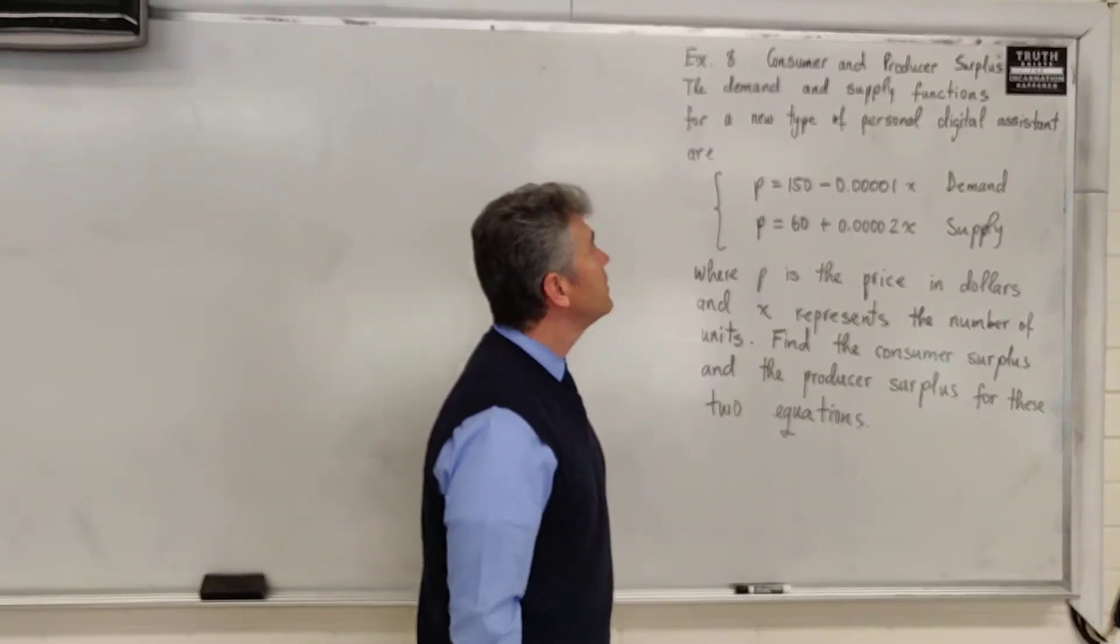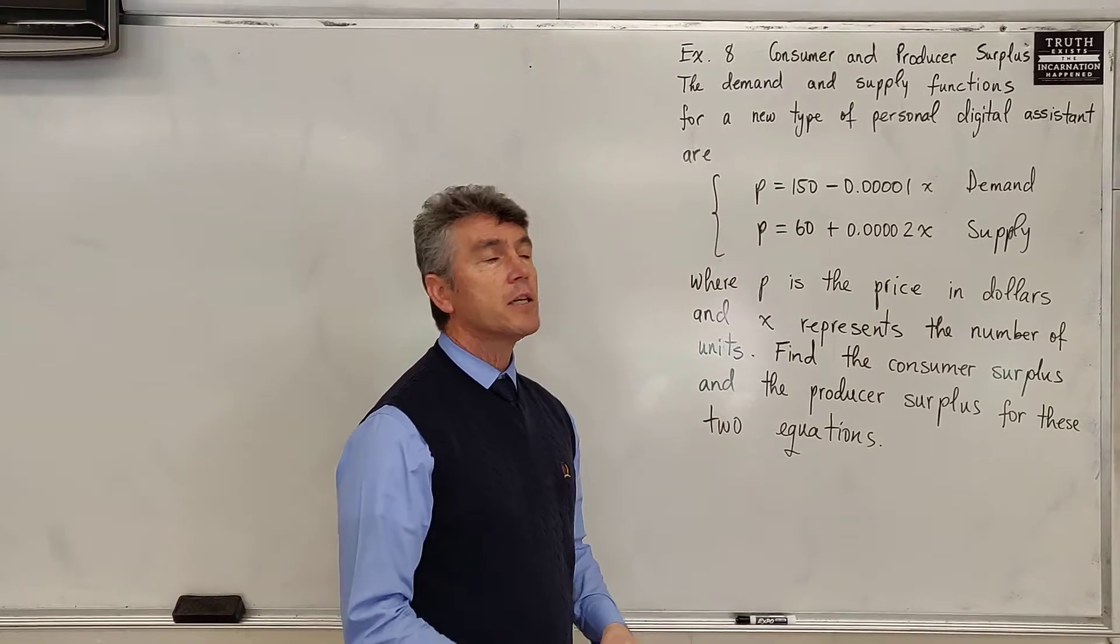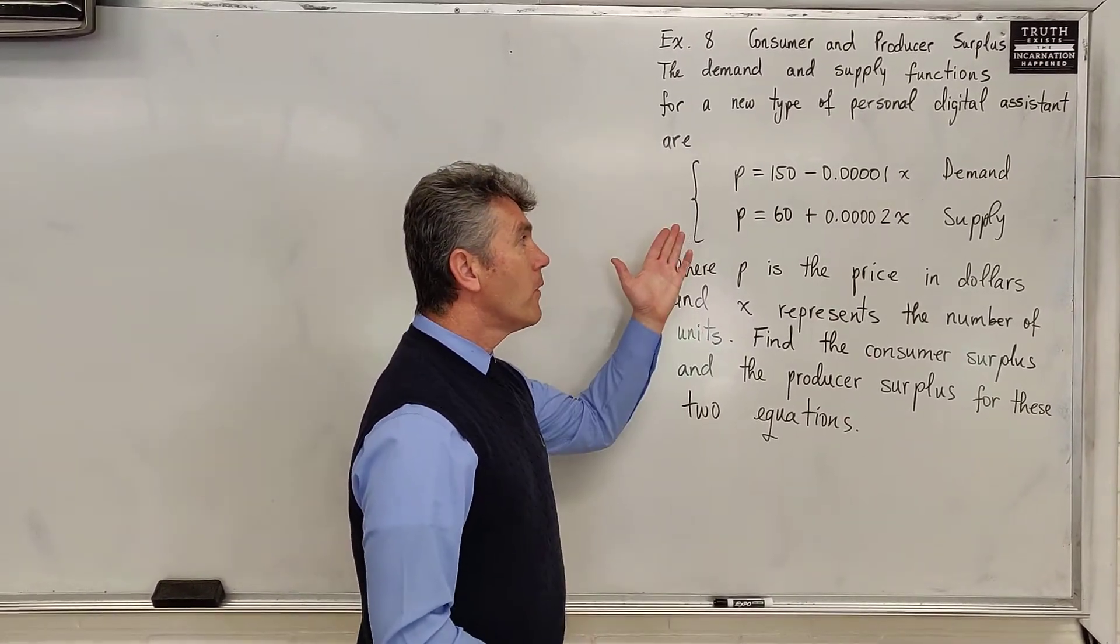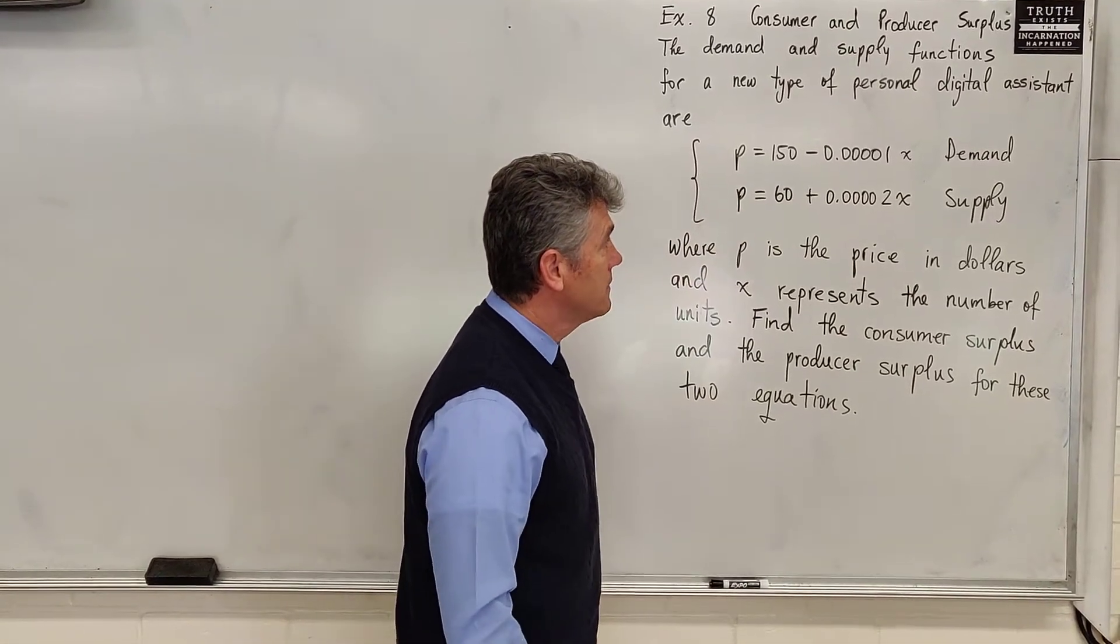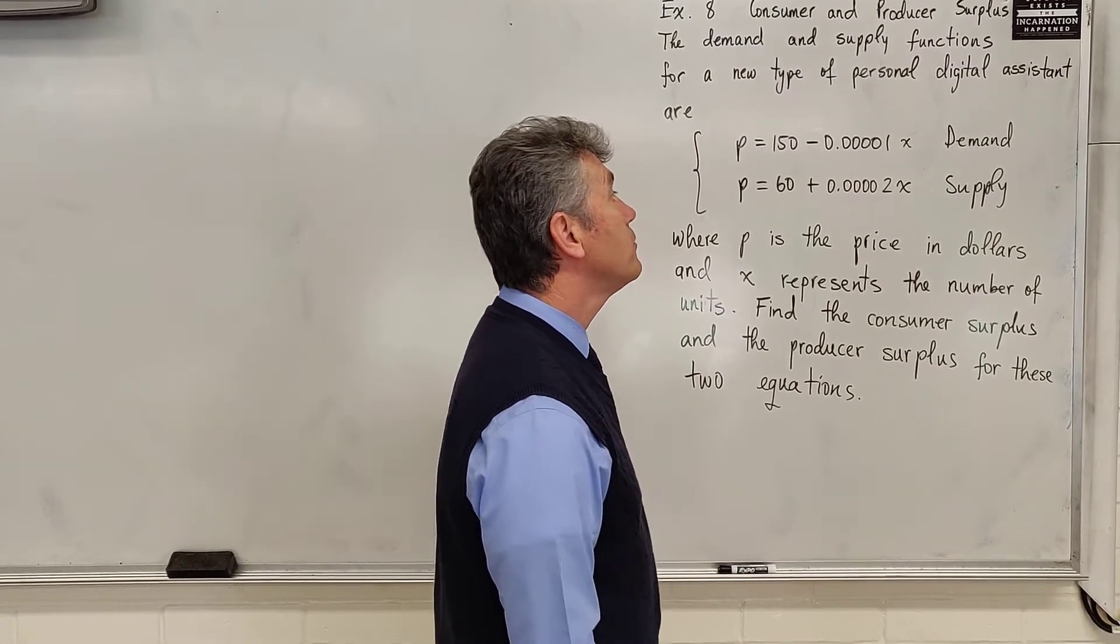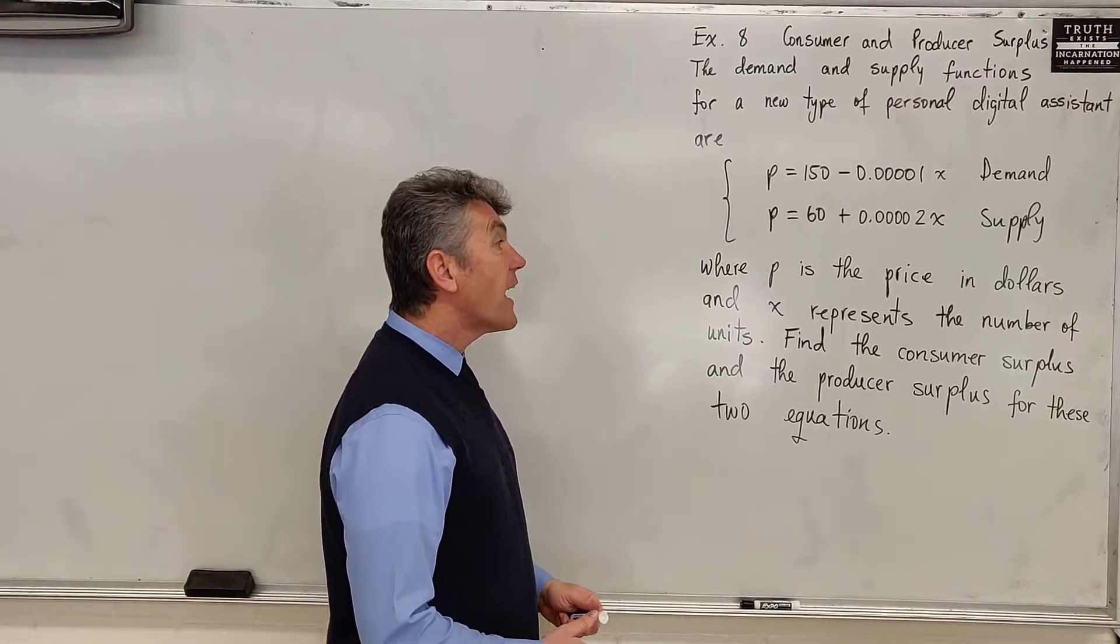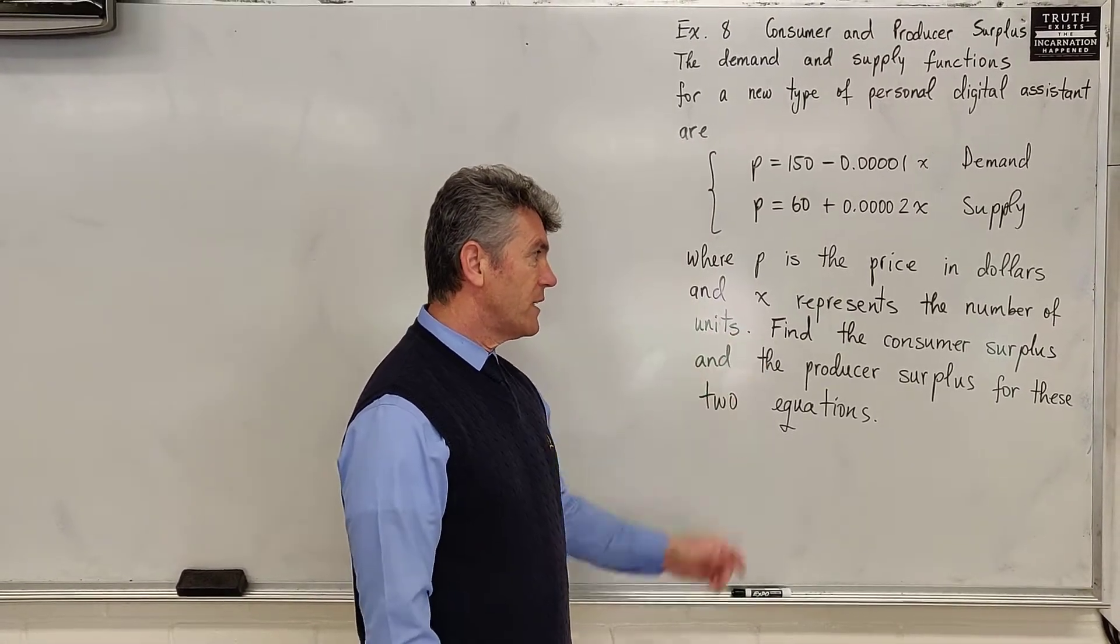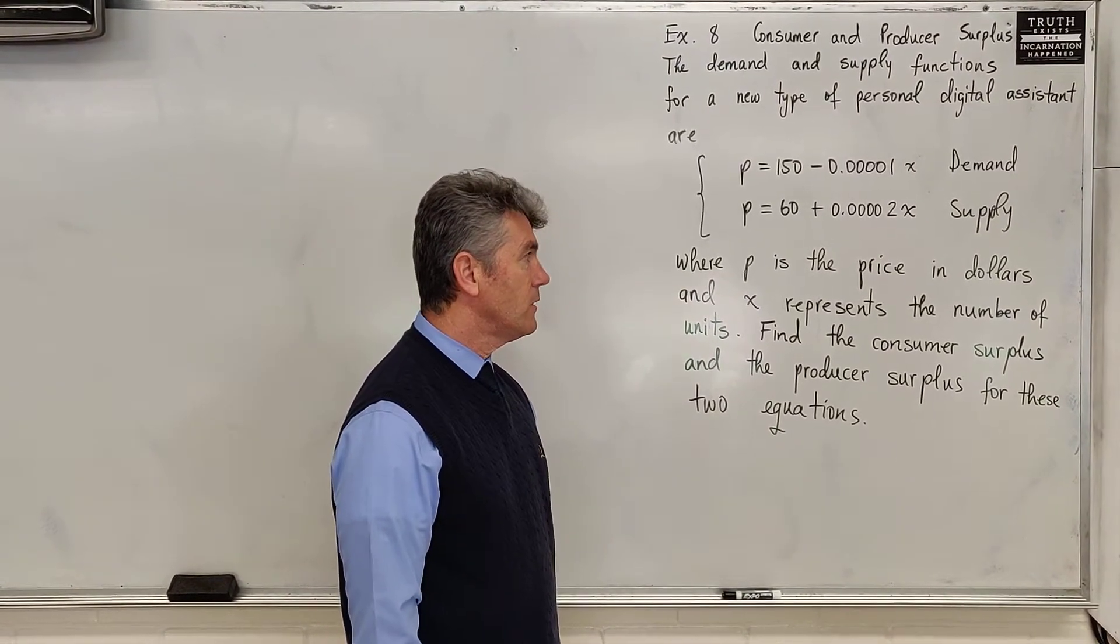The demand and supply functions for a new type of personal digital assistant are P = 150 - 0.0001x (demand) and P = 60 + 0.0002x (supply), where P is the price in dollars and x represents the number of units. We want to find the consumer surplus and producer surplus for these two equations.